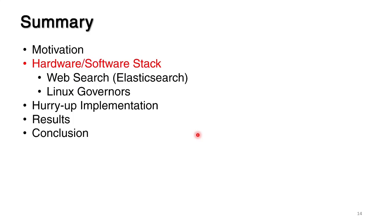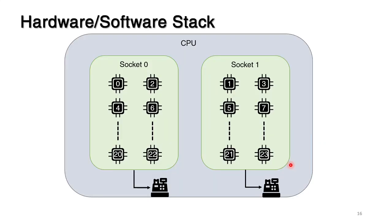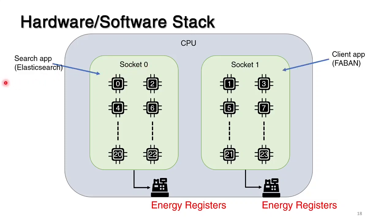Let's briefly speak about hardware and software. We used the Intel Xeon with 24 cores for running our experiments. Both services were on this CPU, hosted by the Chameleon Cloud Service, which is sponsored by the National Science Foundation. This processor has two sockets, each with an energy register which we can measure before and right after the experiment. On socket zero we put our search application, Elasticsearch, and on the other we run the Faban client application, which generates random search requests.